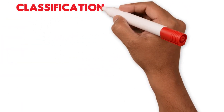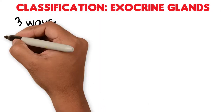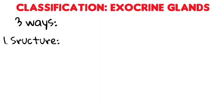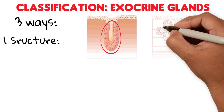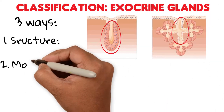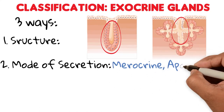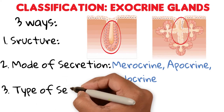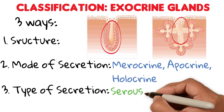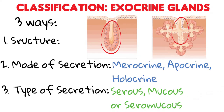Exocrine glands can be classified in three different ways: number one, by structure — the shape of the secretory portion and the branching of the ducts; number two, by mode of secretion — as merocrine, apocrine, and holocrine; and number three, by the type of secretion — as serous, mucus, or seromucous.